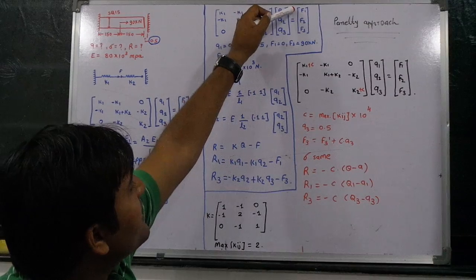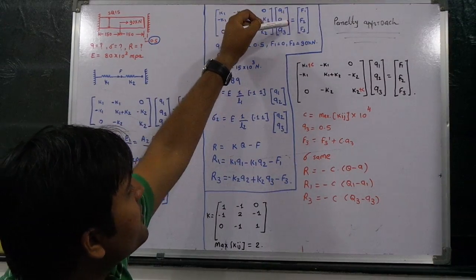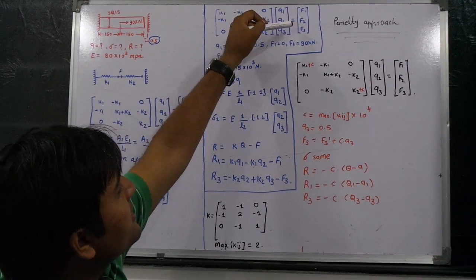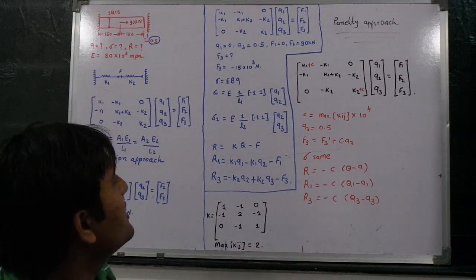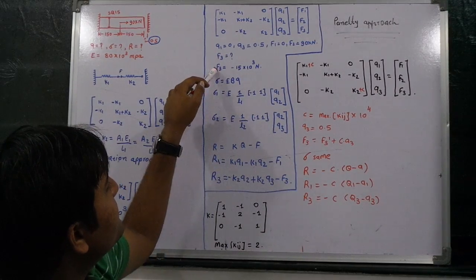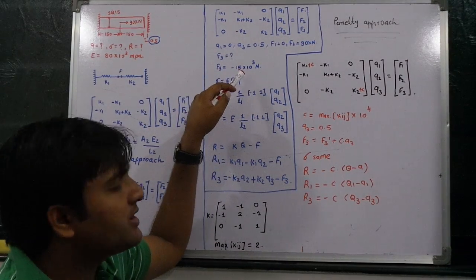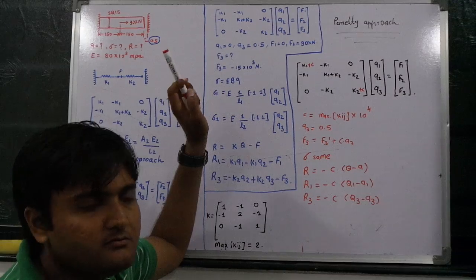F1, F2 and F3, where F1 is equal to 0 because of the fixed support, F2 is equal to 90kN, and F3 value we need to find it out. From that equation, F3 value is equal to minus 15 multiplied by 10 to 3 Newton.